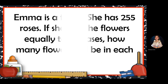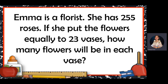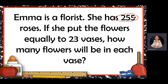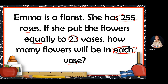Next example: Emma is a florist. She has 255 roses. If she puts the flowers equally into 23 vases, how many flowers will be in each vase? The given numbers are 255 and 23 vases. She will divide them equally into 23 vases. The clue word 'each' tells us this is division.